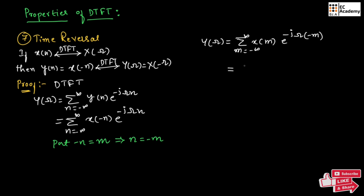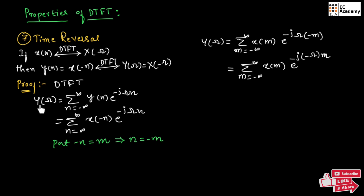If we substitute this in the above equation, we will get y of omega equal to summation of m equals minus infinity to infinity of x of m exponential to the power of minus j omega times minus m. So, we can write the above equation as summation of m equals minus infinity to infinity of x of m exponential to the power of minus j of minus omega into m, which is nothing but x of minus omega, which is y of omega. This is the proof.